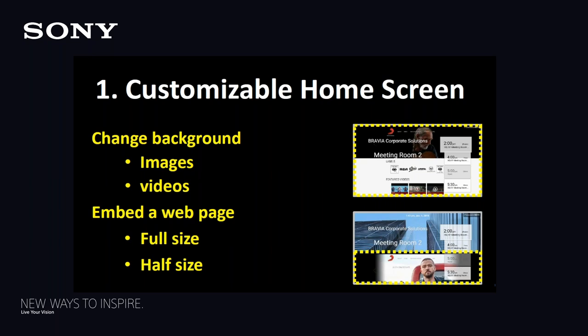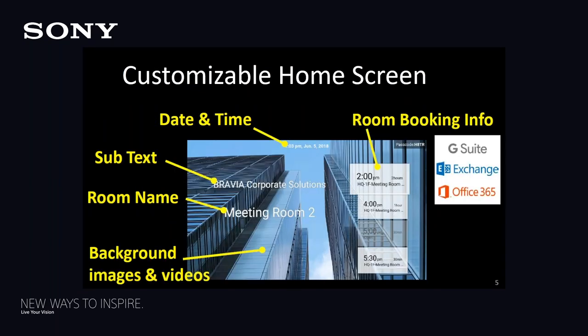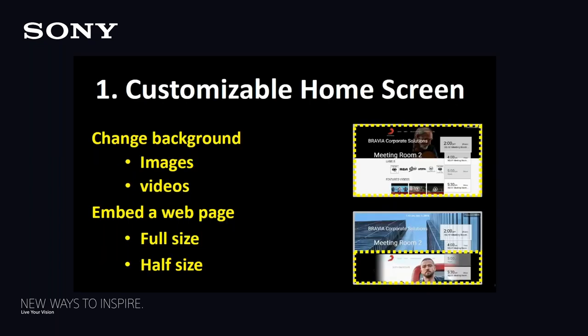In addition to images and video you can run on the background or home screen — when I say standby screen, there's no signal attached. This is what you would see instead of a black screen or a screen that just says HDMI in the corner. You would have an actual useful screen that welcomes a client, identifies what room you're in, or gives wireless access point SSID instructions. You can also show a web page either in half screen or full screen.